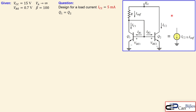We have here the simple current mirror using two BJTs. You can see Q1 and Q2, and we have a resistor just to create the reference current and also the voltage source VCC. Q1 and Q2 are exactly the same — they are matched. That means we have the same beta (current gain), the same early voltage, and also the same emitter areas. So we have the same dimensions for our transistors.